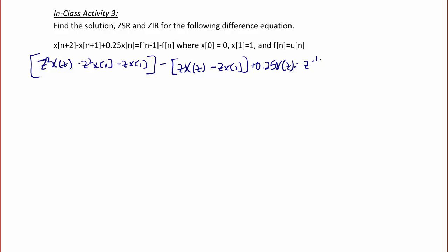Now we're going to collect like terms. On the left, we collect all the terms that include X(z), so we have (z² - z + 0.25)X(z). On the right side, we have z²x(0) + zx(1) - zx(0) + (z⁻¹ - 1)F(z).